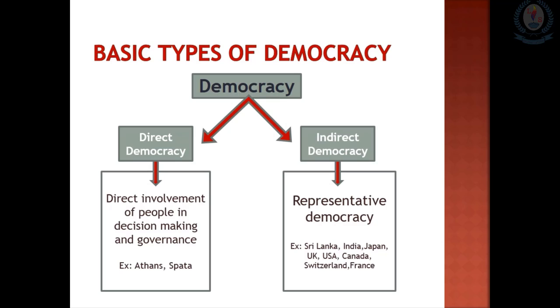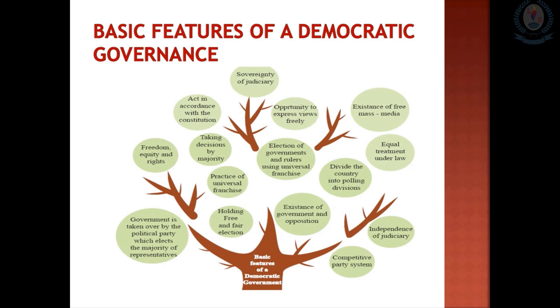Countries where indirect democracy functions include Sri Lanka, India, Japan, UK, United States of America, Switzerland, and Canada. The basic feature of democratic governance is that the government is elected by representatives chosen by the decision of the majority.